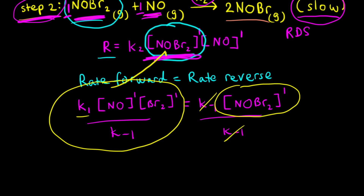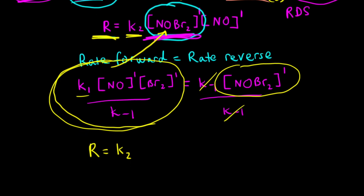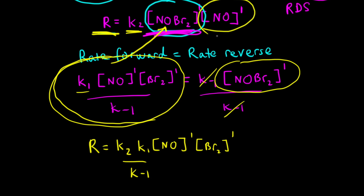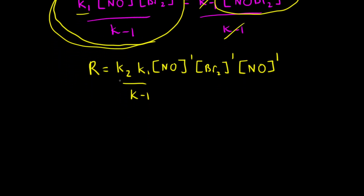Next, we substitute this expression in for the concentration of our intermediate. The rate of reaction equals K2 times the substituted expression — K1 times [NO] to the first power times [Br2] to the first power divided by K-1 — and we still have the remaining concentration of NO to the first power. Multiplying K2 times K1 and dividing by K-1 gives us a single new constant K.